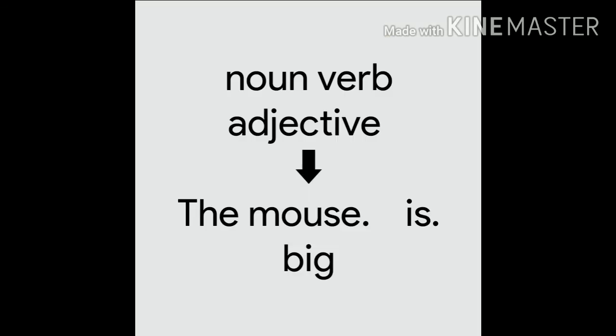Adjectives can also go after the verb to be. Noun, verb, adjective: the mouse is big. Big here comes after the verb to be. Thank you for listening.